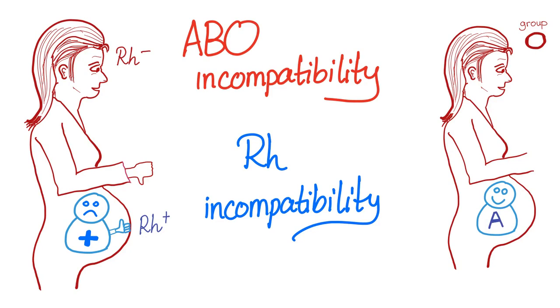Hey guys, it's Metacosis Perfectionalis. In previous videos, we have discussed ABO incompatibility and RH incompatibility causing hemolytic disease of the newborn. Today, we'll compare between the two.